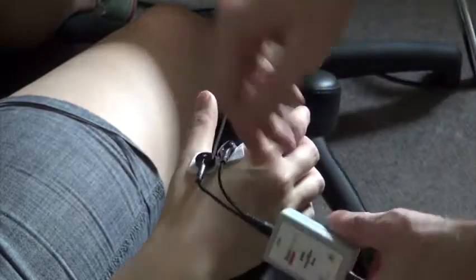EMG electrodes are placed on the hand to help determine the participant's resting motor threshold, or RMT.